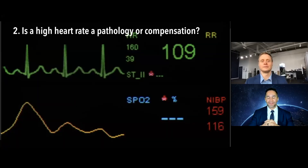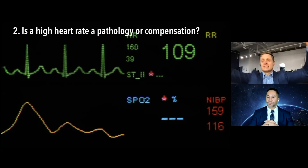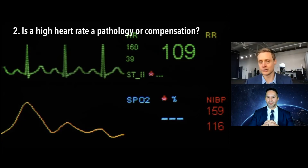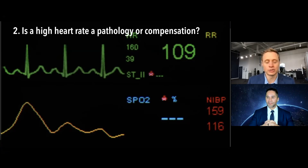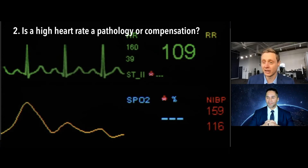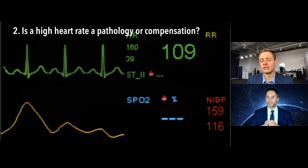The next key concept: in the autonomic world, a high heart rate is a big signal. We need to ask whether a high heart rate is the thing that is failing, or whether it's a compensation for another pathology — or both. That distinction is super important, because we don't want to assume either. Sometimes the heart rate is the pathology; sometimes it's a compensation for something else.